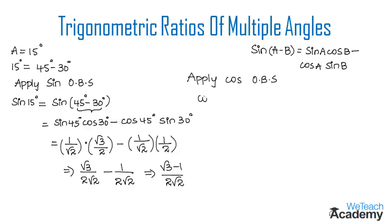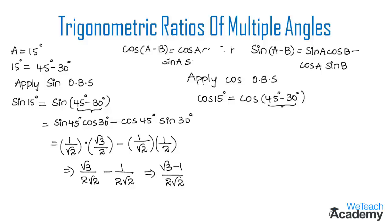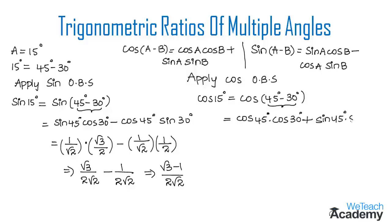Now let us apply cosine on both sides. We get cos 15° equal to cos(45° - 30°). This is in the form of cos(a - b), which equals cos a cos b plus sine a sine b. Using this formula and replacing a with 45° and b with 30°, we get cos 45° cos 30° plus sine 45° sine 30°.